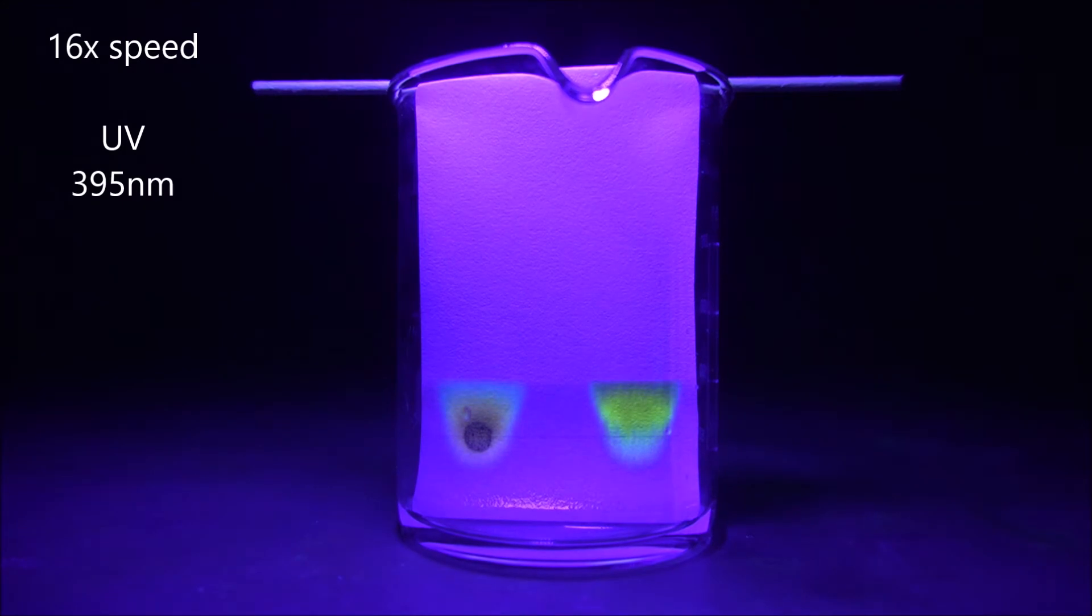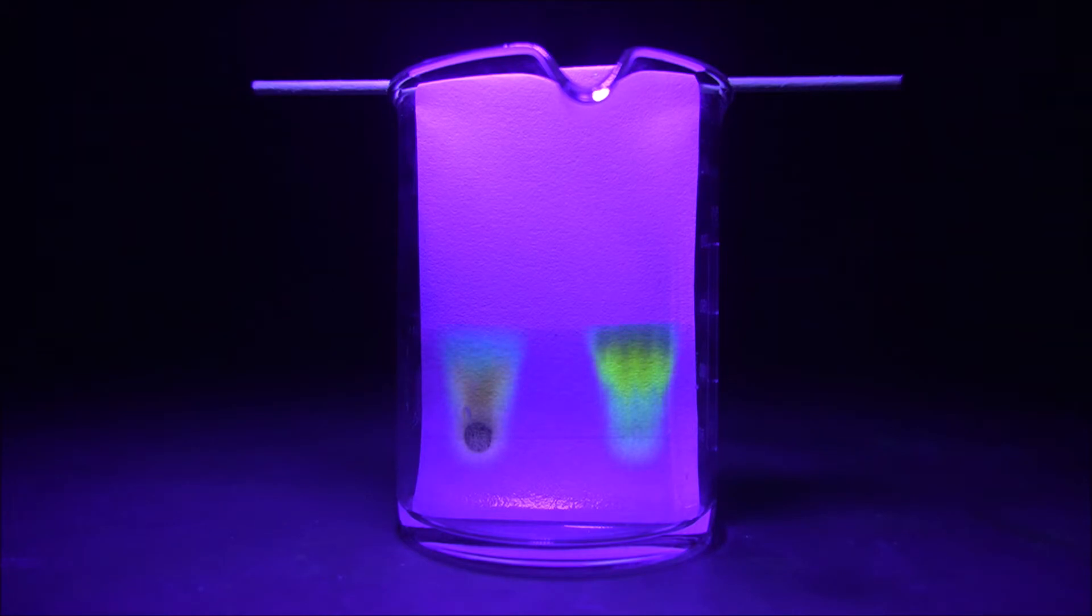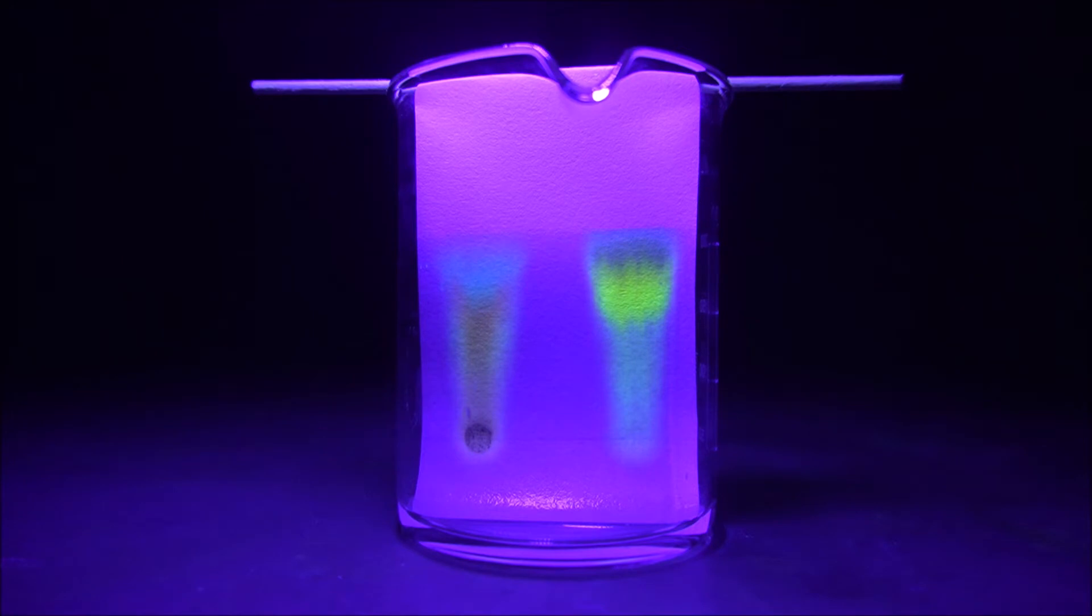Observe the development of the chromatograms under UV light with wavelength around 395 nm. In reality, the colors of the spots are much more vivid and shiny, which I found impossible to reproduce accurately in any video so far. Developing of the chromatograms takes about 15 minutes.